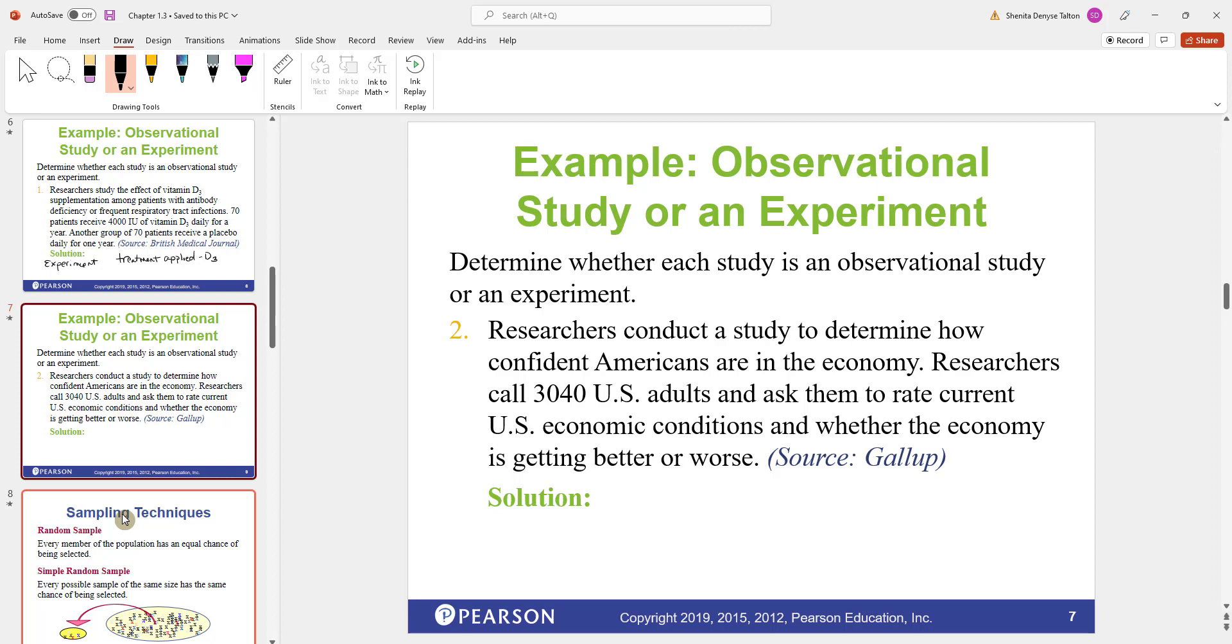In this next example, researchers conduct a study to determine how confident Americans are in the economy. Researchers called 3,040 U.S. adults and asked them to rate current U.S. economic conditions and whether the economy is getting better or worse. In this one, this is an observational study. There's no treatment applied. They're not trying to sway someone's answers. This is an observational study. It does not attempt to influence responses. They just asked the questions and recorded what the person said.